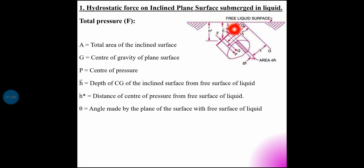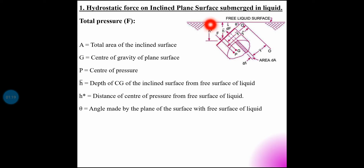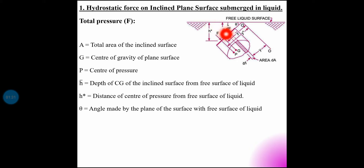This direction view is the true shape. That is total pressure. The total pressure force — the intensity of pressure is the total pressure. The total fluid pressure force acting on the total area of the inclined surface.